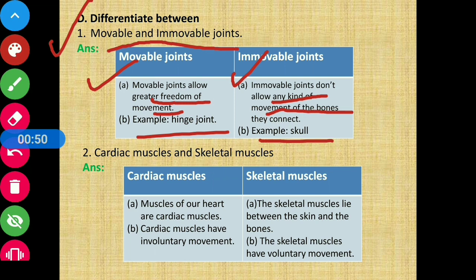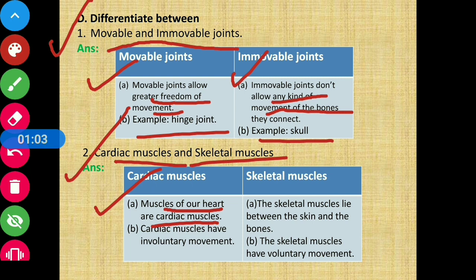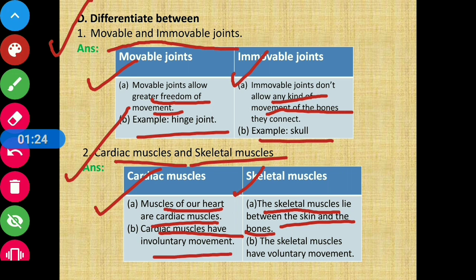Second question: cardiac muscle and skeletal muscle. Cardiac muscles are the muscles of our heart. Skeletal muscles lie between the skin and the bones. Cardiac muscles have involuntary movement — they do not move according to our will. Whereas skeletal muscles have voluntary movement — movement that occurs according to our will. These are the differences between the given questions.